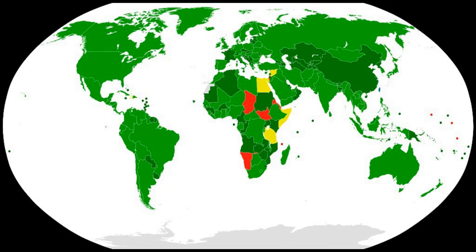Article I: never under any circumstances to acquire or retain biological weapons. Article II: to destroy or divert to peaceful purposes biological weapons and associated resources prior to joining. Article III: not to transfer, or in any way assist, encourage or induce anyone else to acquire or retain biological weapons.